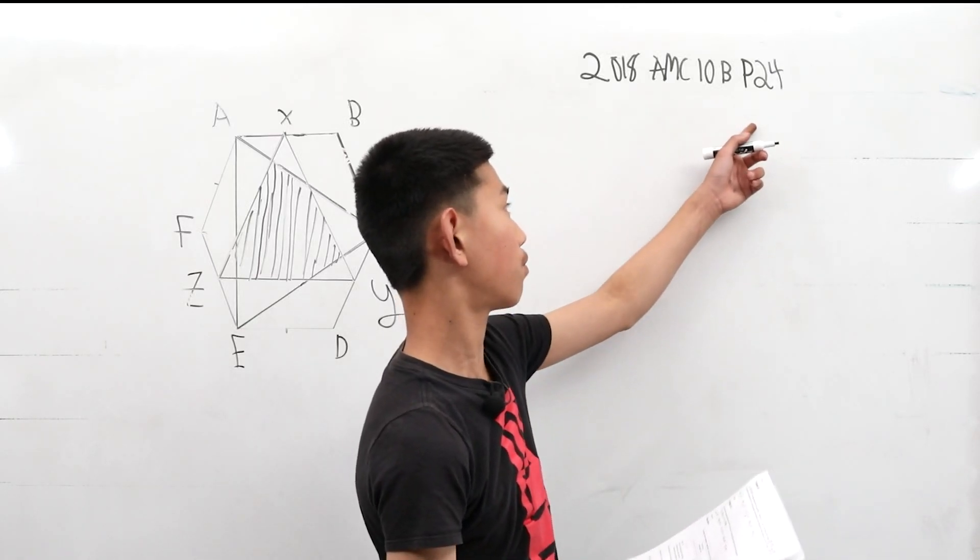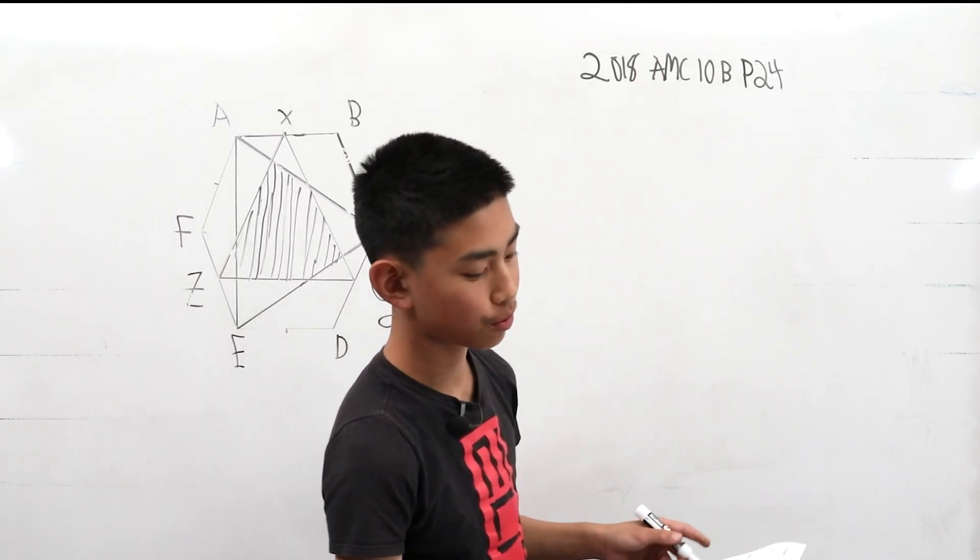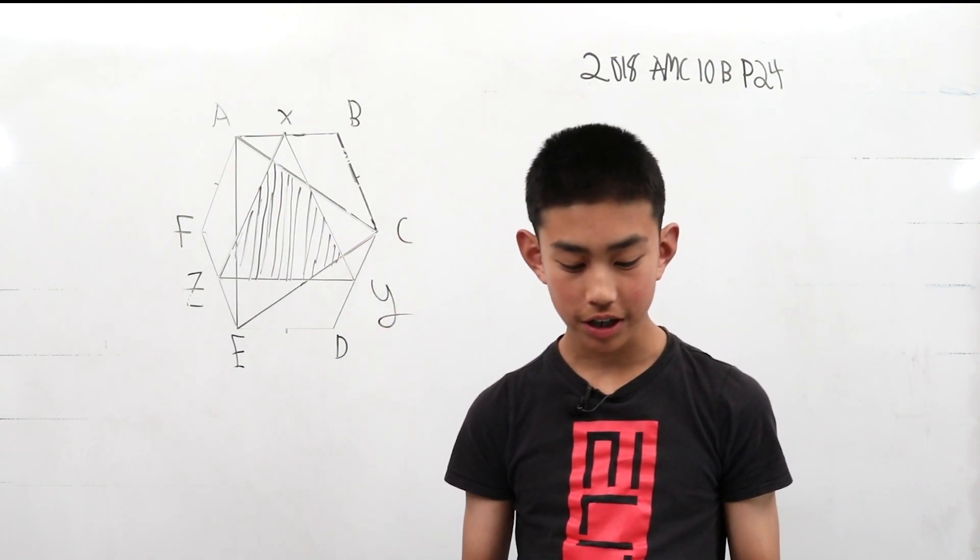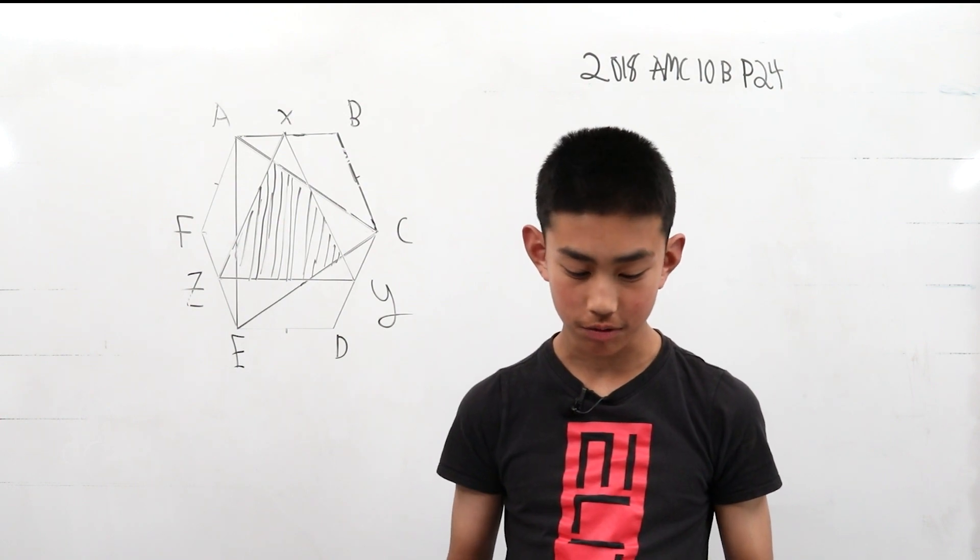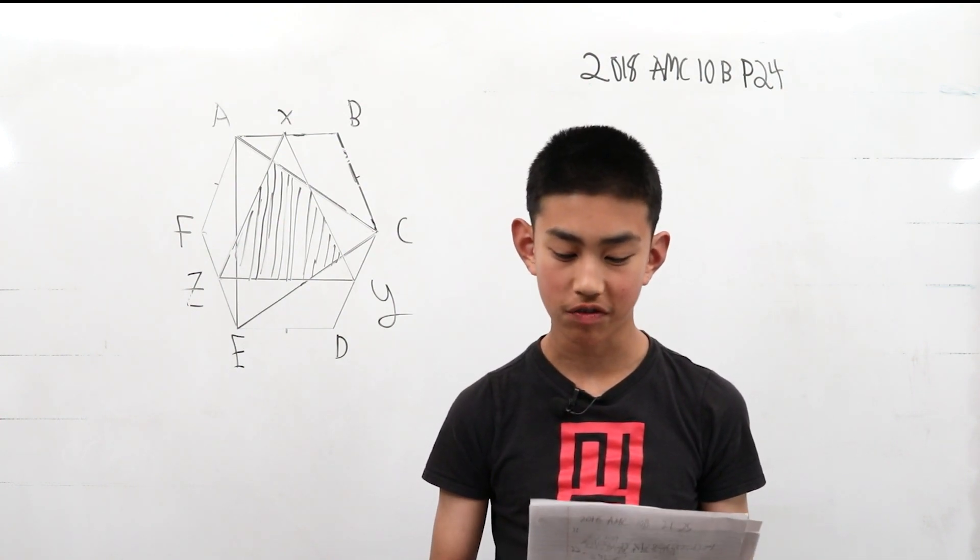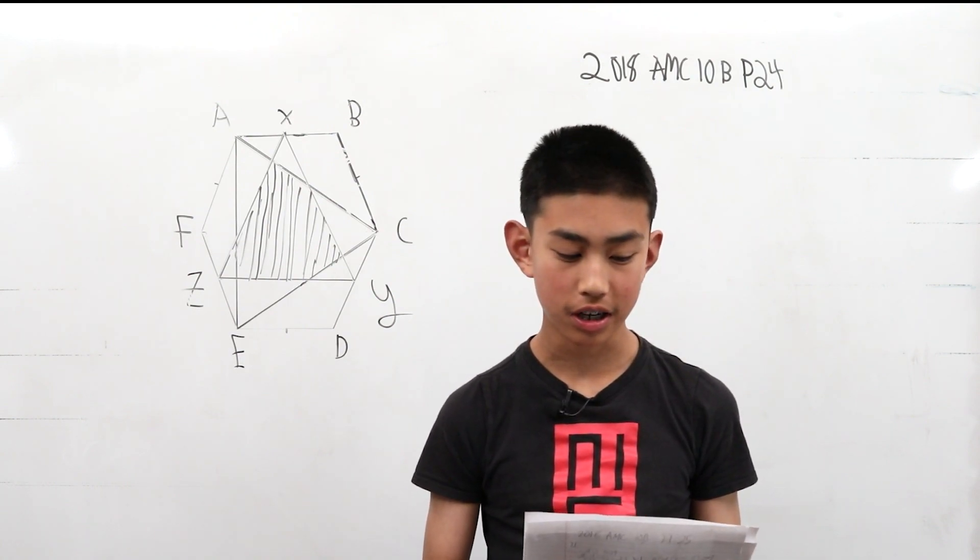We're solving problem 24 from the AMC 10B from 2018. Let ABCDEF be a regular hexagon with side length 1. Denote X, Y, Z as the midpoints of AB, CD, and EF respectively.